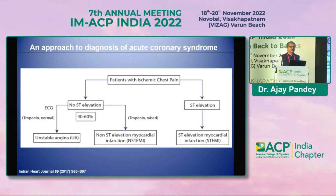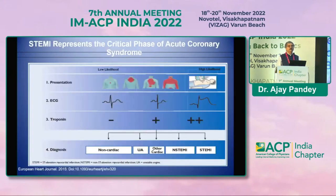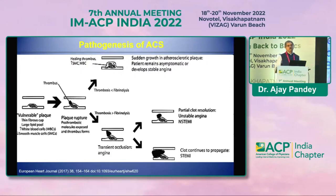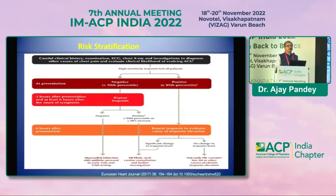STEMI is thought to be more dangerous, but that's not always the case. In non-STEMI, troponins are raised as a biomarker with acute chest pain. We differentiate STEMI from non-STEMI by ECG ST elevation and highly raised troponin levels. In STEMI there is complete thrombus formation, whereas in non-STEMI there is partial clot resolution. Anticoagulation and dual antiplatelet therapy are important in both, but thrombolytic therapies are specific to STEMI.